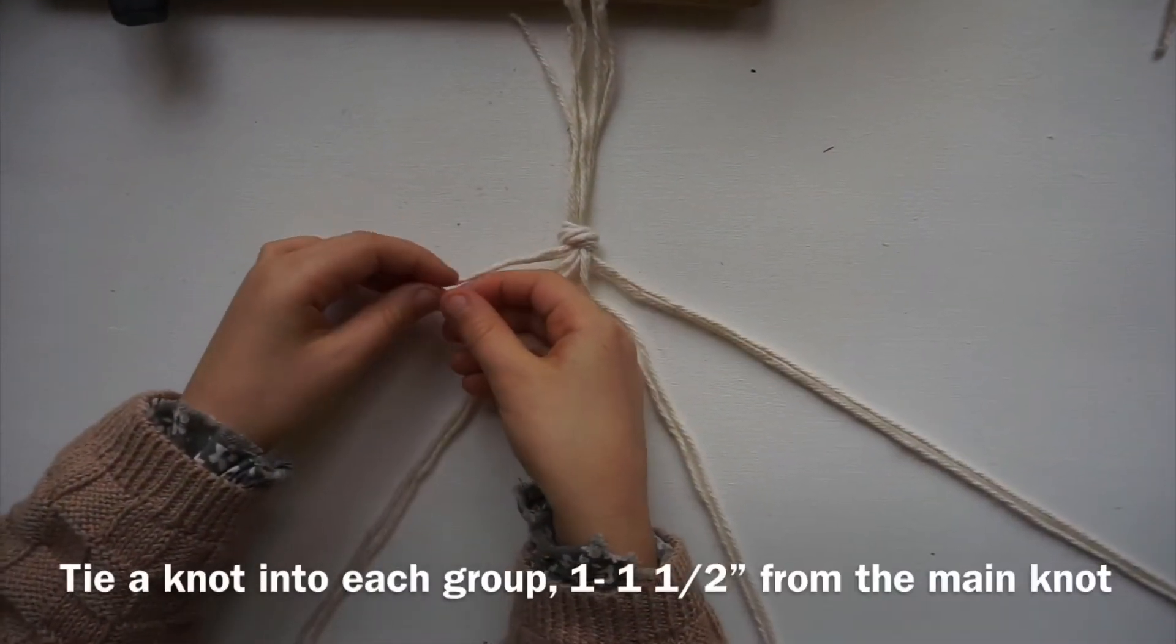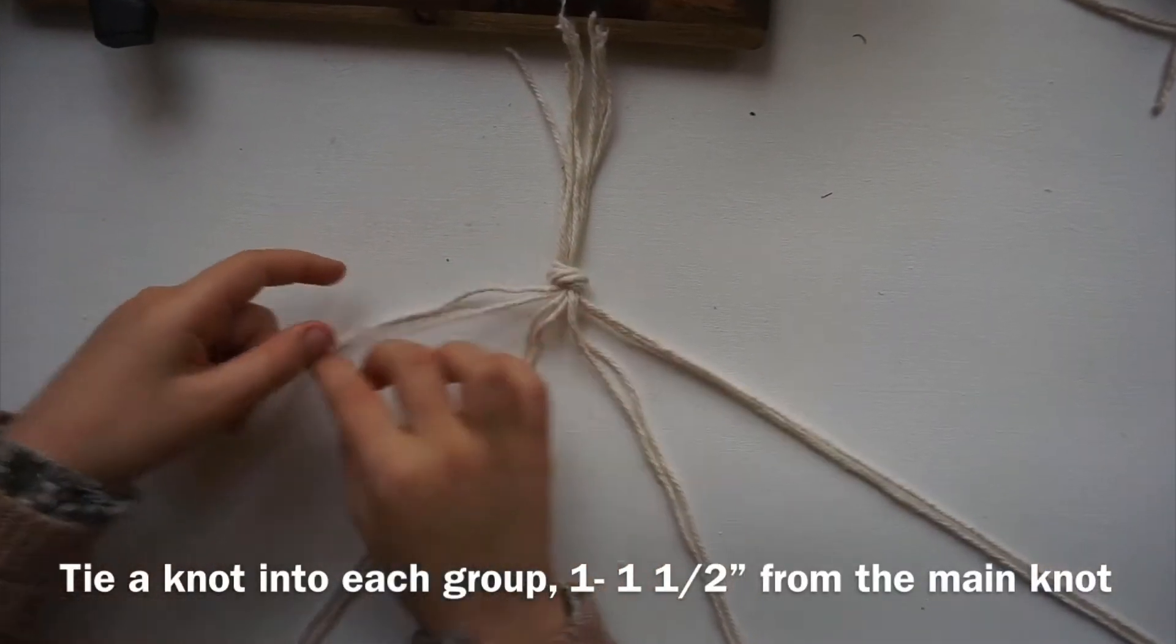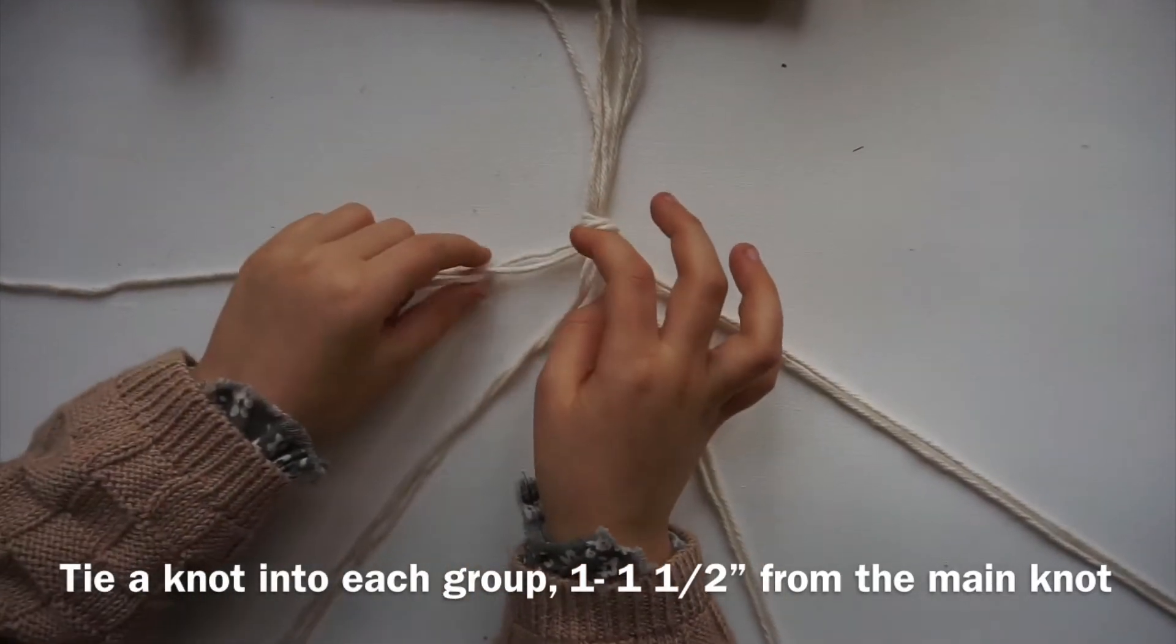The tassel is separated into four groups of two and tie knots about an inch to an inch and a half away from your main knot.